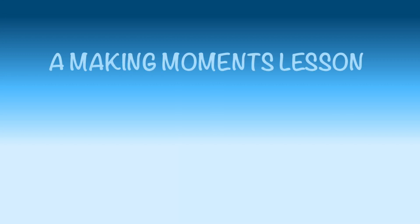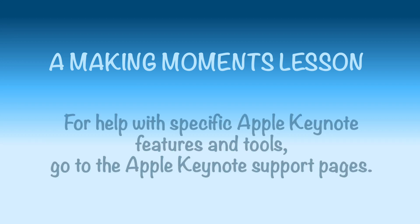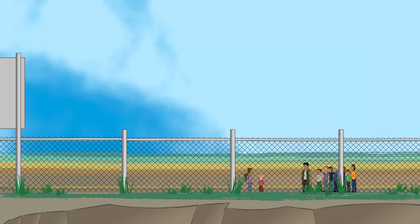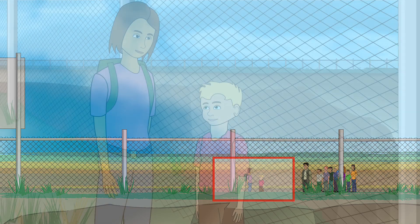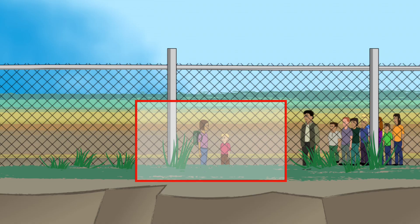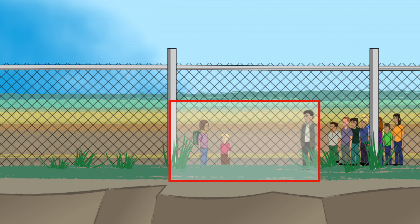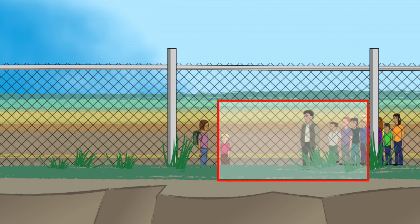I love it when a cartoon comes together. Don't you? Here's some ideas about how to work on your cartoons. Read the Apple Keynote support pages for details about specific features. Each shot in a cartoon has a rectangular frame that shows a part of the world of the story at a moment in time. In live action filming and 3D animation, the frame is the viewport of a camera that moves through the world showing moment after moment.